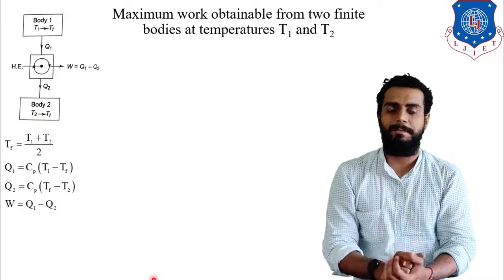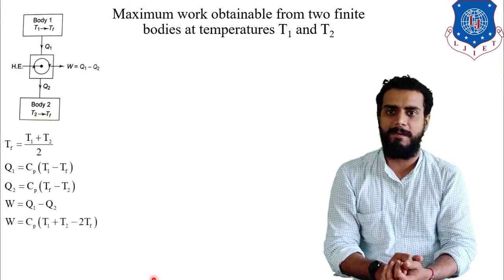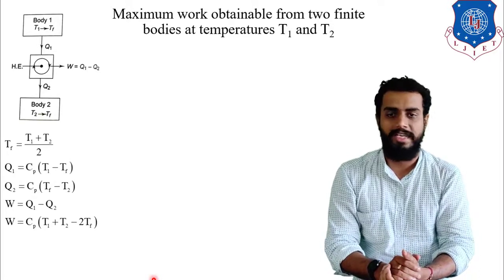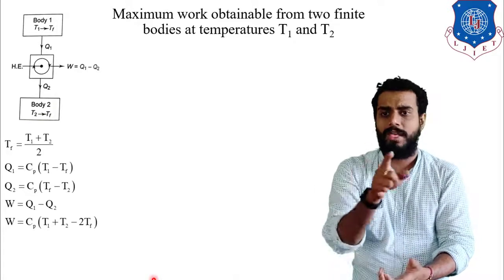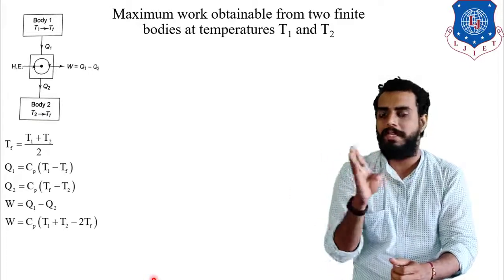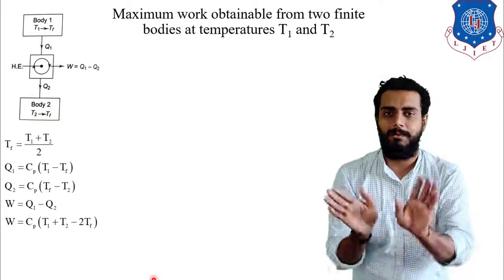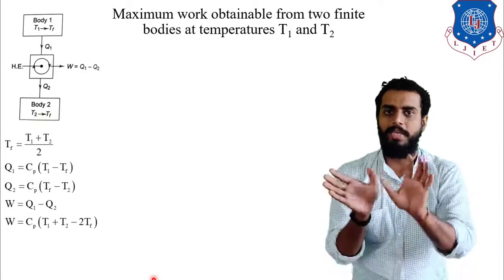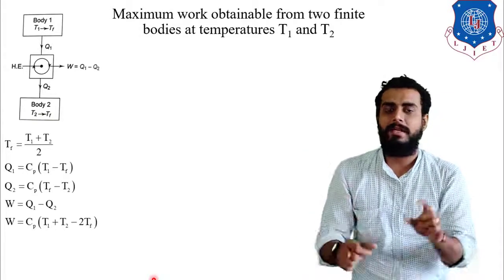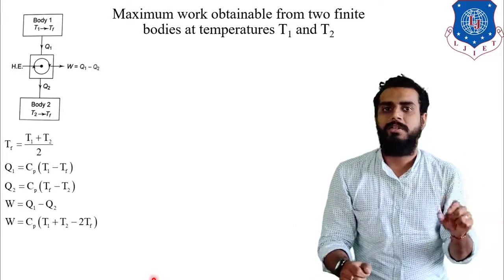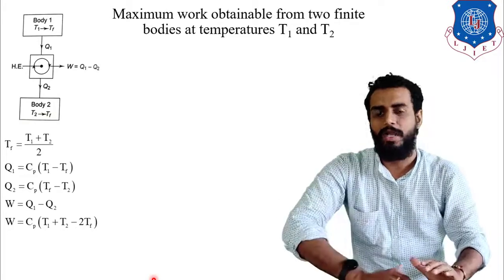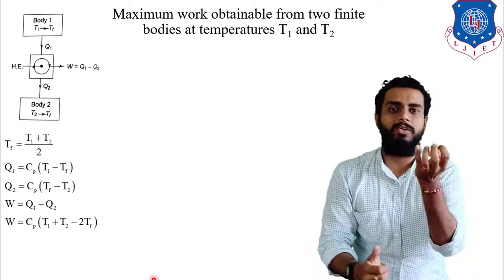Substituting Q1 and Q2 and taking Cp as common, W equals Cp into (T1 plus T2 minus 2Tf). For given values of Cp, T1, and T2 kept fixed, if you want to achieve maximum work you must decrease Tf — the more you decrease Tf, the more maximum work you will get.